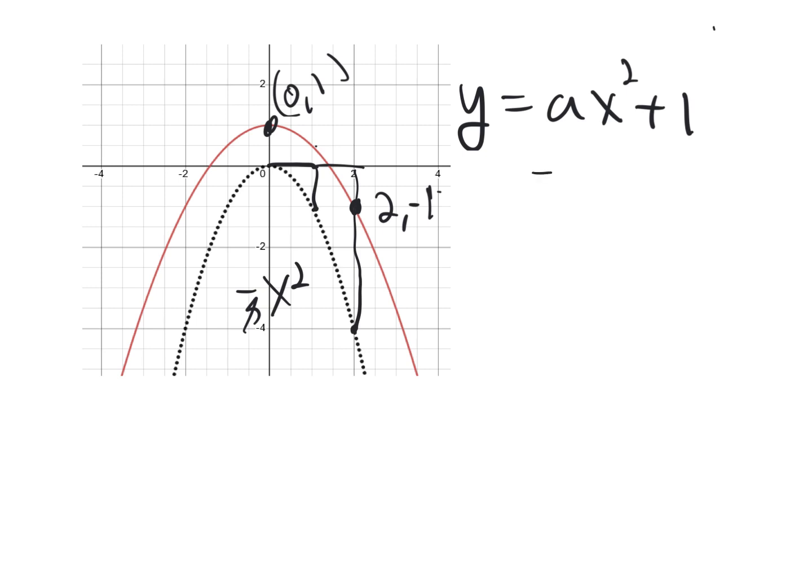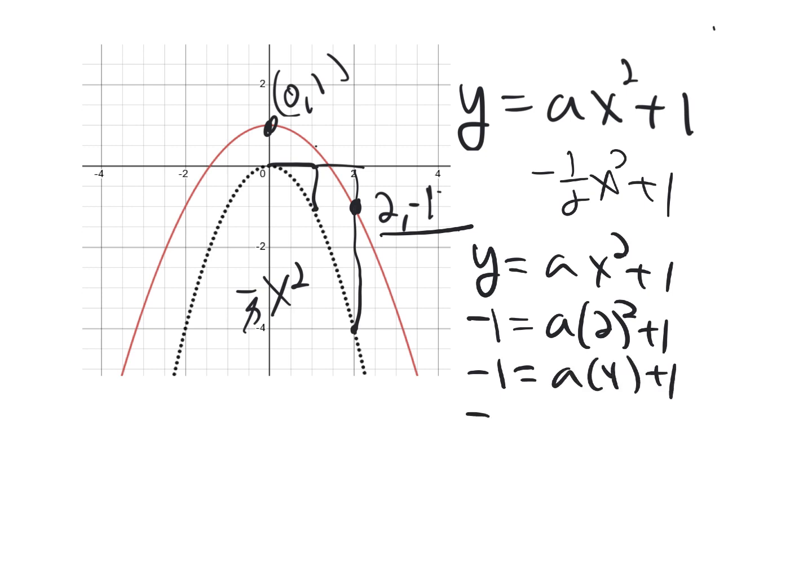So I'm pretty sure it's going to be negative 1 half x squared plus 1. Let's do it with the A trick. So I know y equals ax squared plus 1. I have this point here. So negative 1 equals A times 2 squared plus 1. So negative 1 equals A times 4 plus 1. Subtract 1. That gives me negative 2 equals 4A. Divide by 4. A has to be negative 2 over 4, negative 1 half. And that's what we got looking at the graph.